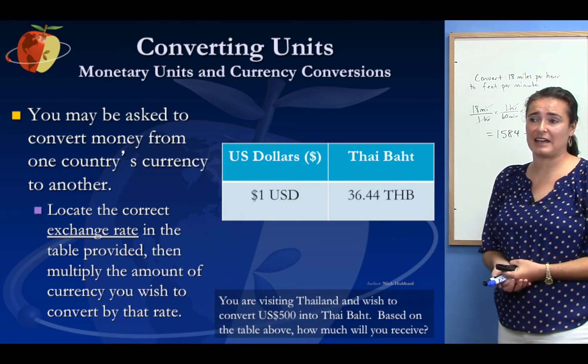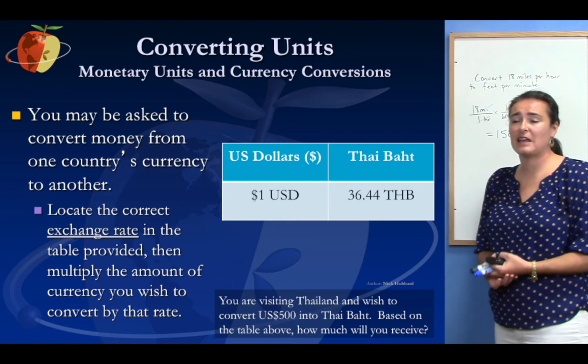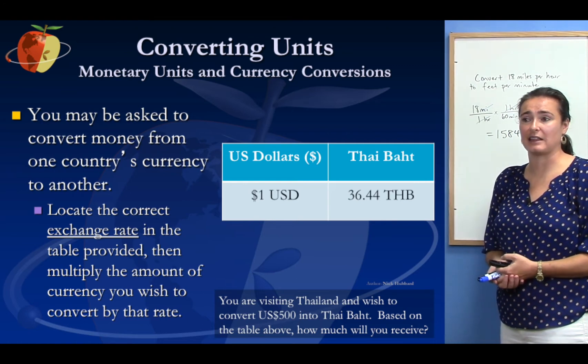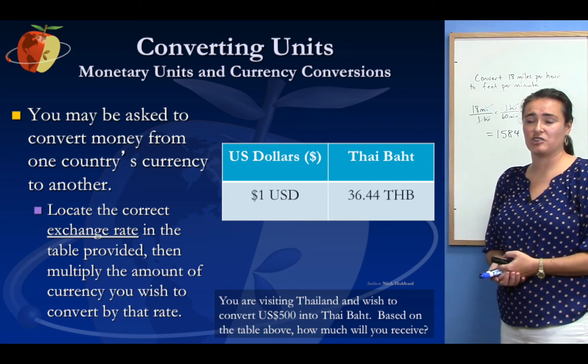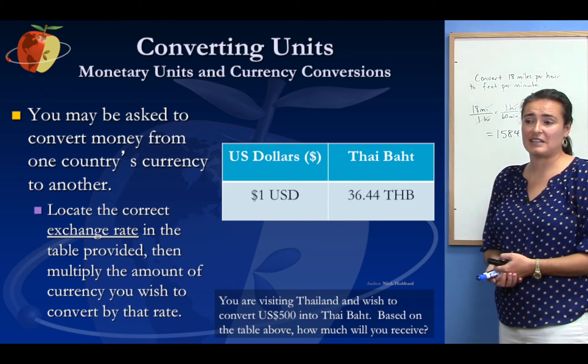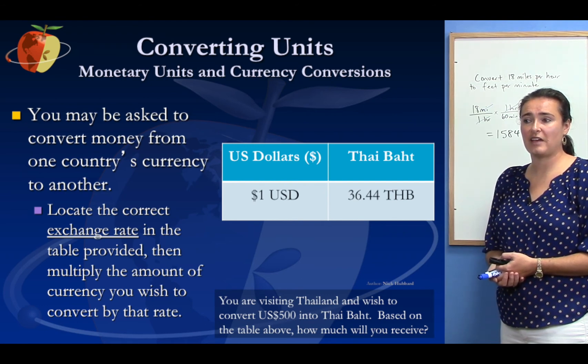You might also be asked to convert money from one country's currency to another. So for example, here we have US dollars compared to Thai baht, that's the money they use in Thailand. Locate the correct exchange rate in the table provided, and then multiply the amount of currency you wish to convert by that rate. So here's an example. You're visiting Thailand and wish to convert 500 US dollars into Thai baht. Based on the table above, how much would you receive?